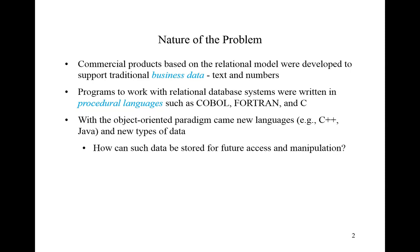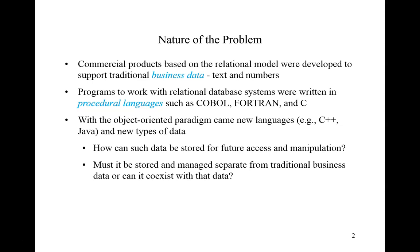The questions we become confronted with are: how can such data be stored for future access and manipulation? How could we give persistence to objects instantiated from C++ or Java classes? Must it be stored in some separate repository from the traditional business data, or could it co-exist with that data? It has become possible to take your traditional business data, add new data types and objects, and store them together in the same repository — in a single object-relational database.